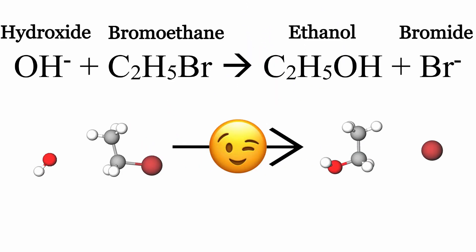So that's what happens when hydroxide backside attacks a bromoethane molecule. We end up with ethanol and a bromide ion. If this video helped you, feel free to leave a like.